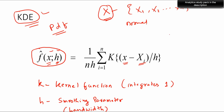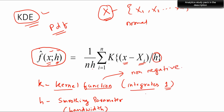K is a function, not a parameter — it's called the kernel function. It has two properties: it is non-negative, so it doesn't take a negative value, and it integrates to one. This special type of function called the kernel function has these two properties: non-negative and integrates to one. H is known as the smoothing parameter.